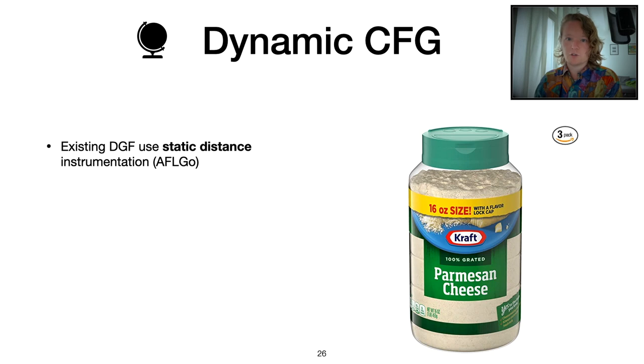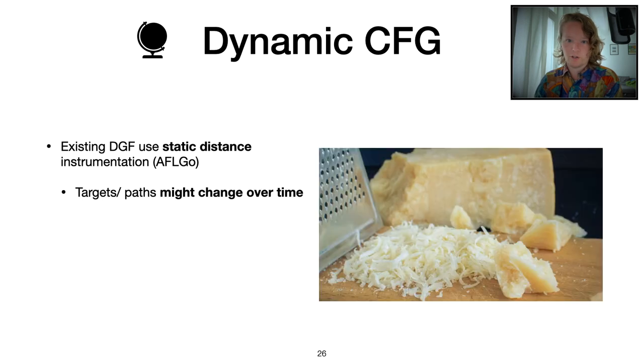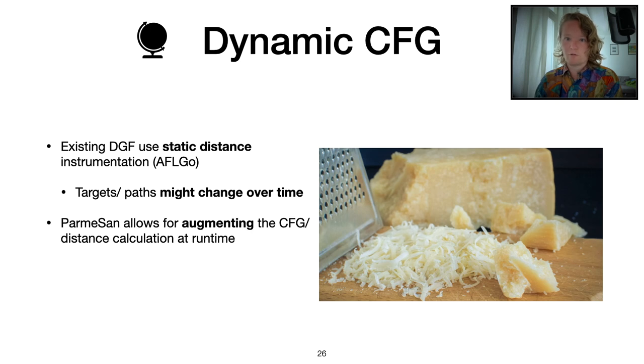But as you can see, this static approach is not always the best part. Like, you can have this pre-grated approach, but as all Italians know here in the audience, you should always try to grate your cheese as close to using it as possible. So we want to go for a more dynamic approach where we can incrementally improve our control flow graph as we go along.